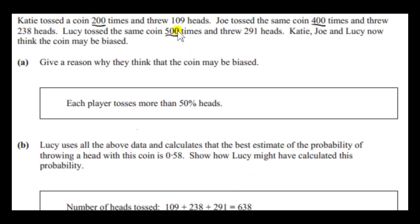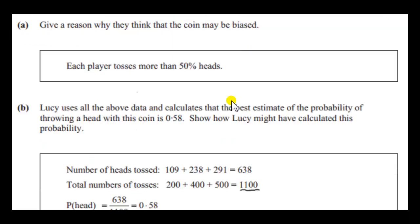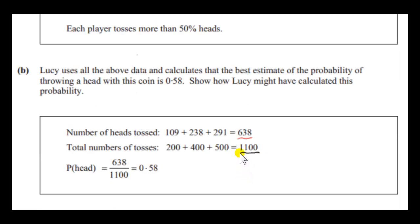And then we just count up the number of times that heads appeared. It's 109, 238 and 291. So we put those values together. We see that out of 1100 tosses in total, 638 of them are heads. So to estimate that probability we put the number of heads over the total number of tosses and that comes to 0.58.